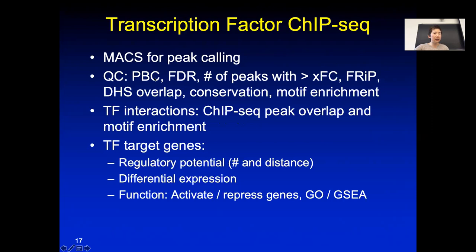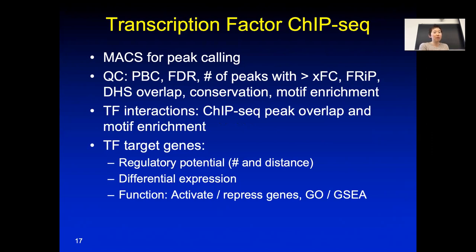PPC measures how much PCR amplification bias you have. We want to make sure that we have FDR when we call the peaks, and also we want to look at how many peaks have good fold change. Because sometimes when you sequence very deep, a lot of peaks show up that are not very good, so you need to have some kind of fold change cutoff. There's also the fraction of reads in the peaks, which tells us how strong the signal to noise is, and whether the peaks really overlap with all the DNase hypersensitivity peaks. A good ChIP-seq dataset should have probably 80 to 90 percent of those binding sites within previously known DNase sites.